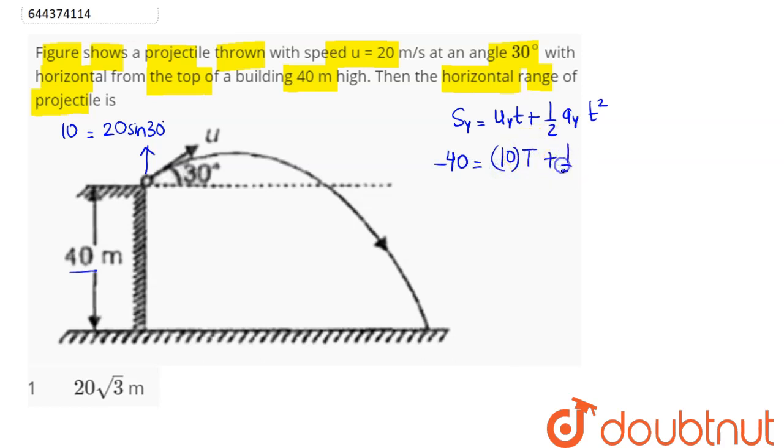Half of g is minus 10, so this is t square. Minus 40 equals 10t minus 5 t square. Dividing by 5, this comes as t